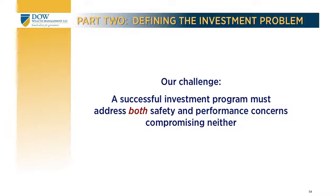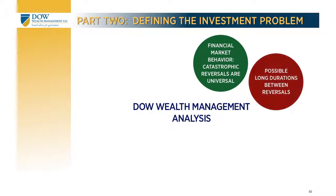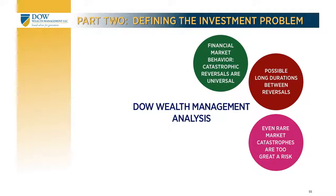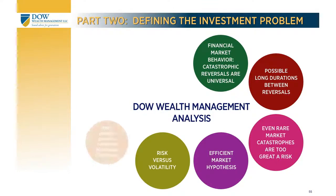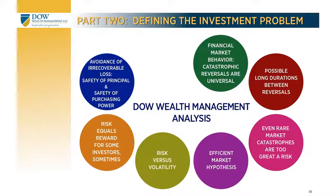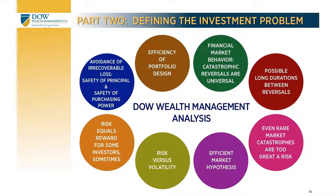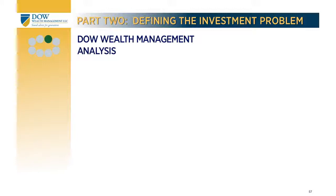A successful investment strategy must somehow address both the safety and performance concerns rather than compromise either. In my next section let me outline eight aspects of the investment environment that Dow Wealth Management considers essential to understand in order to design an appropriate portfolio: one, the natural behavior of financial markets; two, the problem of perceived market trends; three, the high risk of even seemingly unlikely events; four, the efficient market hypothesis and the limitations it imposes on investors; five, a distinction between risk and volatility; six, the relationship between risk and reward; seven, two types of irrecoverable portfolio loss; and eight, the importance of investment strategy efficiency.